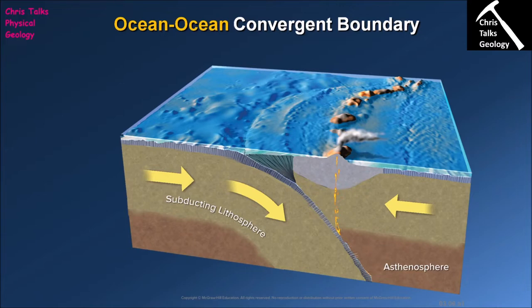A convergent plate boundary forms when we have two pieces of crust crashing into each other. Now, because there are two different types of crust, it actually means there are three different types of convergent plate boundary.